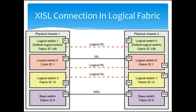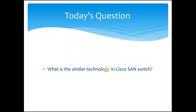It can also happen that you establish a physical ISL connection directly between two logical switches. In that scenario, the packet will always flow through the physical ISL connection rather than through XISL. This applies only to that specific logical switch or fabric — for example, logical switches in fabric ID 15 will still communicate via XISL. So if a physical connection exists, traffic flows over that ISL; otherwise it flows through XISL.